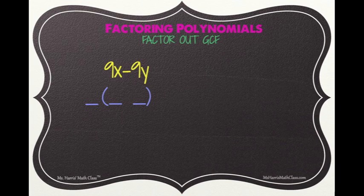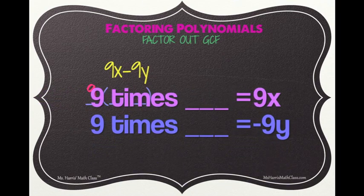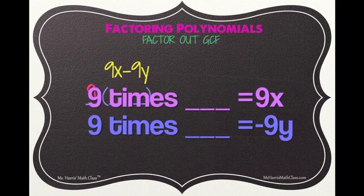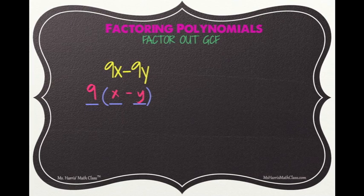For 9x minus 9y, 9 is your greatest common factor, which is written on the outside. To find the remaining factors, ask yourself: 9 times what is 9x, and 9 times what is negative 9y? 9 times x is 9x, and 9 times negative y is negative 9y. So 9 and (x minus y) are your factors. We can check this answer by distributing 9 to (x minus y).